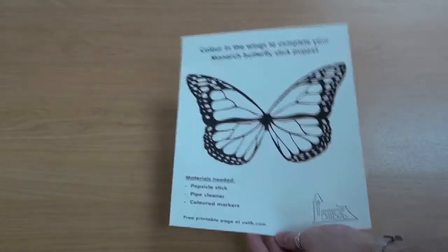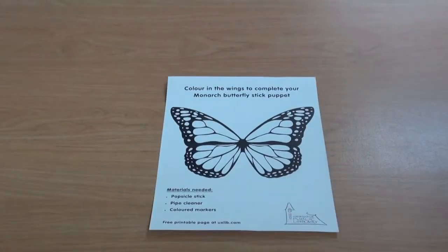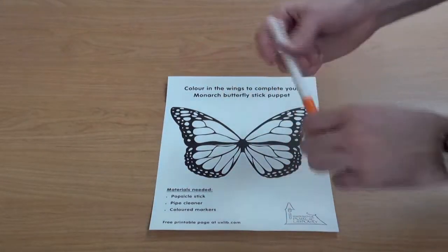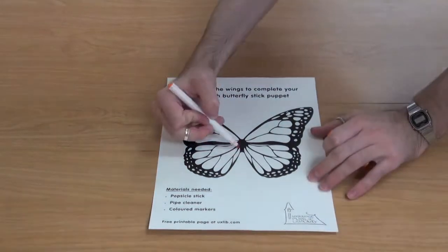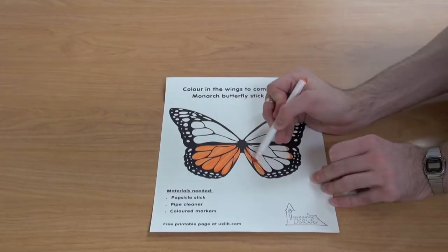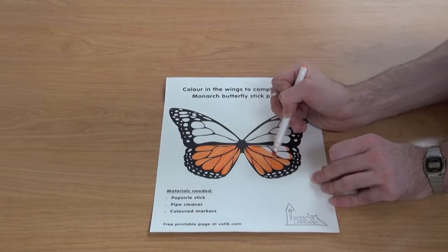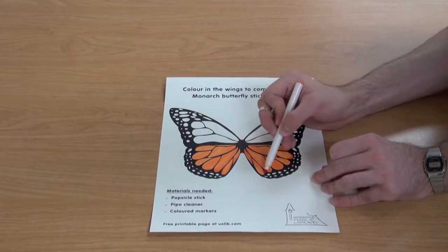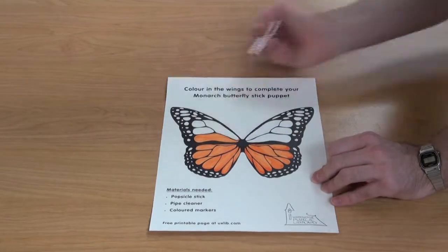From the Uxbridge Public Library's website, we're going to take our orange marker and start coloring in only the inner bits. We're going to leave all those little white dots at the end to resemble a butterfly. Of course, this is a monarch pattern, but you can also paint it whatever color you'd like.